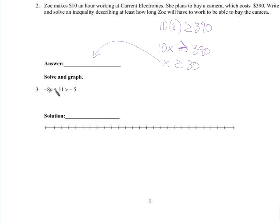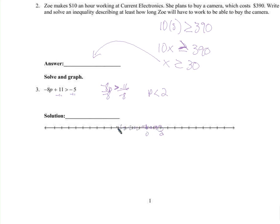Graph and solve. We're going to get p by itself, so we'll subtract 11 from both sides. We get negative 8p is greater than negative 16. We'll divide both sides by negative 8 — and since we divided by a negative, we need to flip the inequality sign. p is less than 2. On the number line, since it's not equal to 2, we leave it open circle.